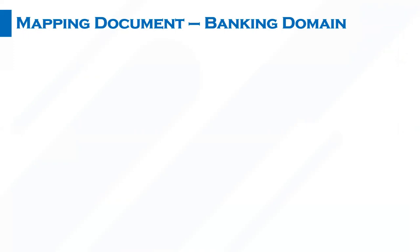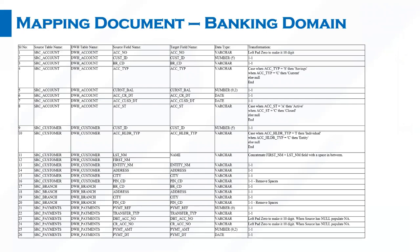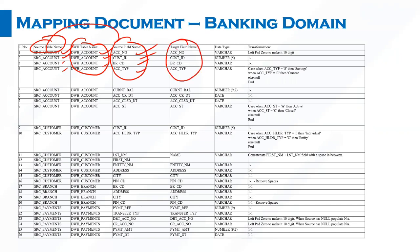Let us take a look at the mapping document for a representative banking domain project. This is a mapping document — usually it exists as an Excel sheet, but we have it here for reference. You can see the source table name is 'account_src' and the target table name, also called the DWH table name, is 'dwh_account'. Within the source table we have account number, customer ID, branch code, account type, and the corresponding target fields are also mentioned, along with their data types.